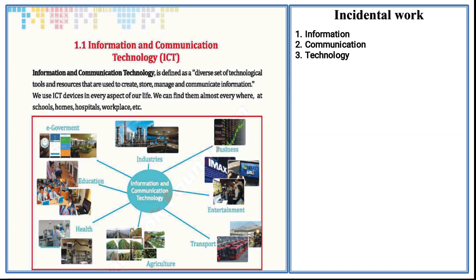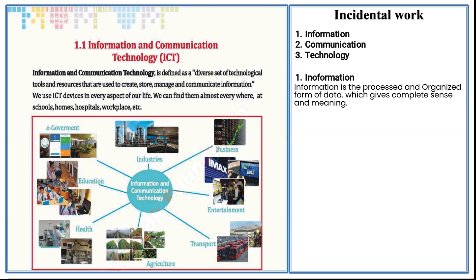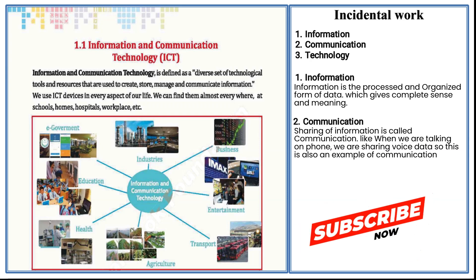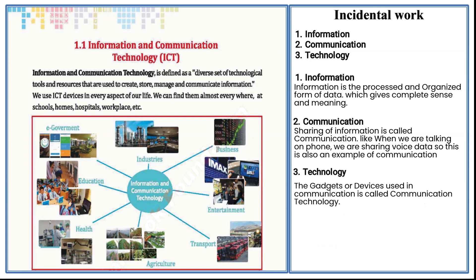Let's explain one by one. The first one is Information. Information is the processed and organized form of data, which gives complete sense and meaning. Second is Communication — sharing of information is called communication. Like when we are talking on the phone, we are sharing voice data, so this is also an example of communication. And the last thing is Technology. The gadgets or devices used in communication is called communication technology.